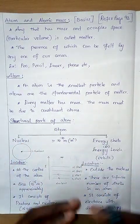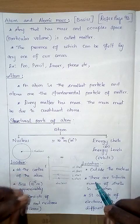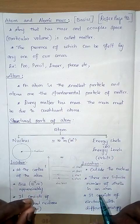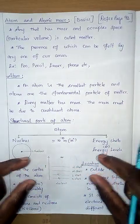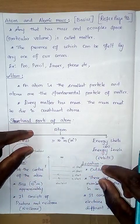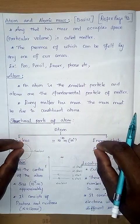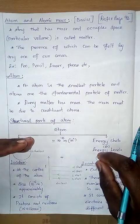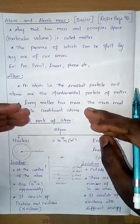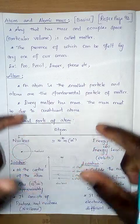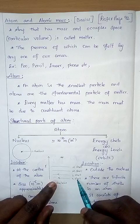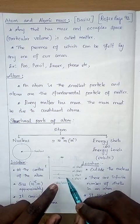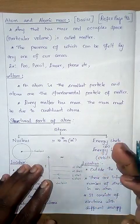How to understand energy levels? Think of video games. In a video game you have levels — level one, level two, level three. Level one is very easy to play, so you need to spend less energy. Once you complete it, you move to the next level, which is a little bit tougher and requires more energy. Apply this concept here: the K shell is least in energy. When an electron is present here, it has the least energy, and once this shell is complete, we move on to the next shell.